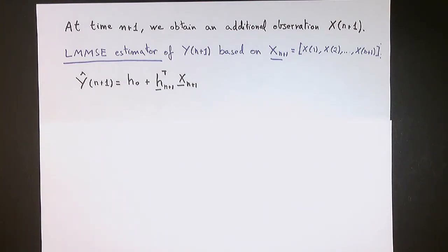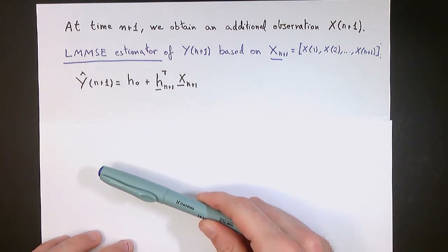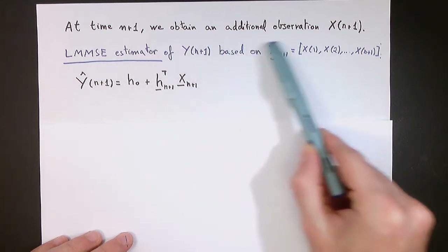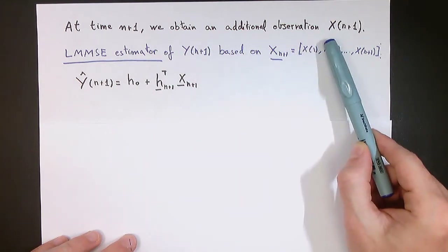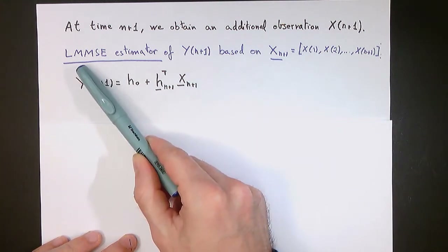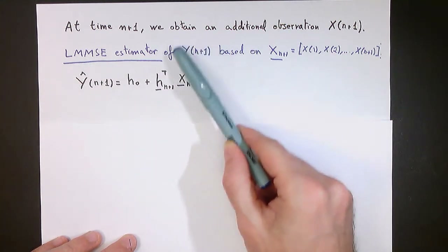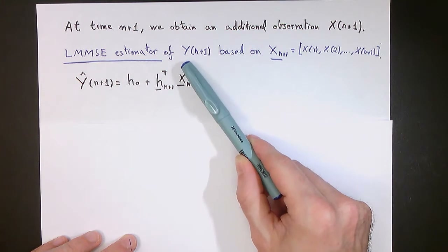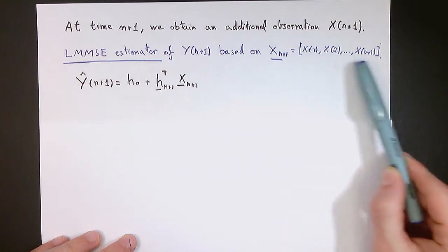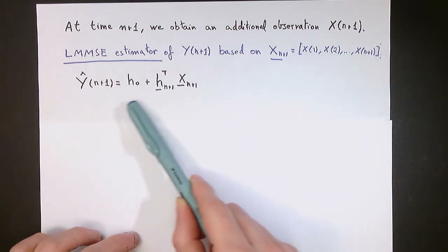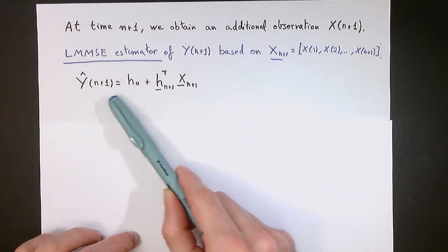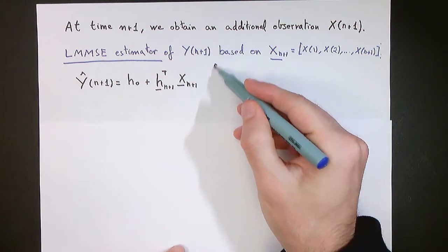Imagine now that after obtaining the estimate of y of n, we let time pass and we obtain at the next time step n plus 1 an additional observation of the process x, x of n plus 1. Now we would like to repeat the process and compute again the LMMSE estimate of the n plus 1th sample of y, based on all the observations of the process x from time 1 to time n plus 1. Similarly as before, we can formulate the LMMSE estimator for y of n plus 1, and the coefficients will be computed in a similar way.